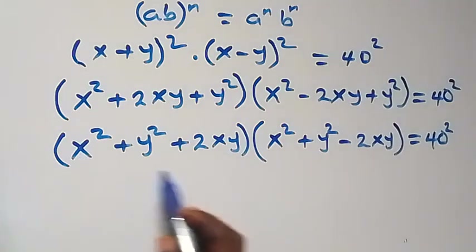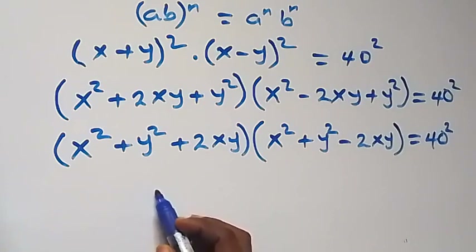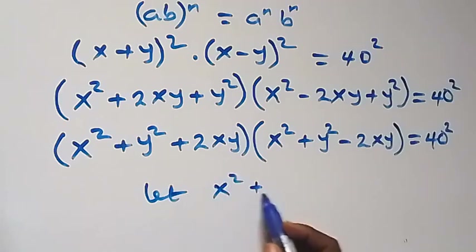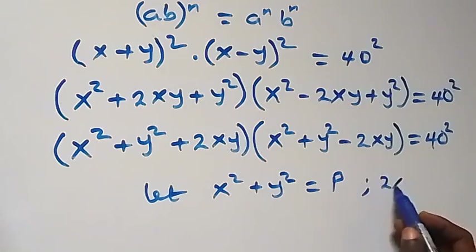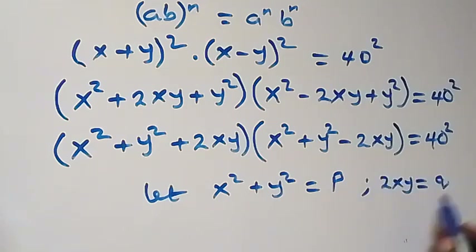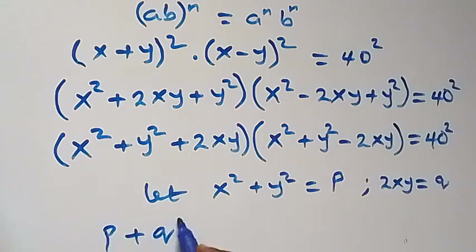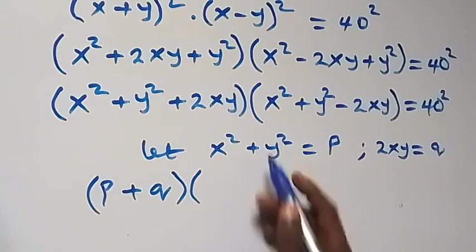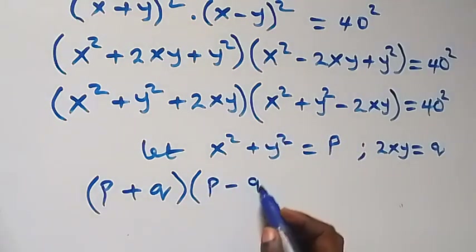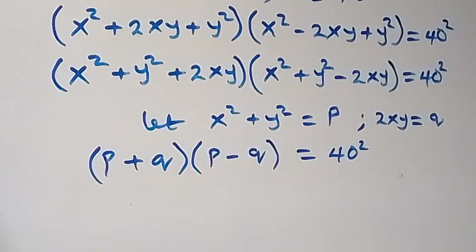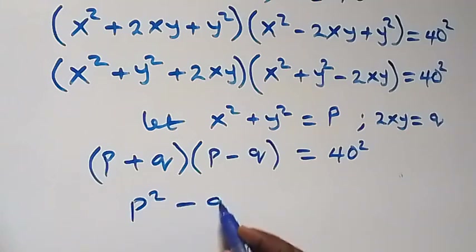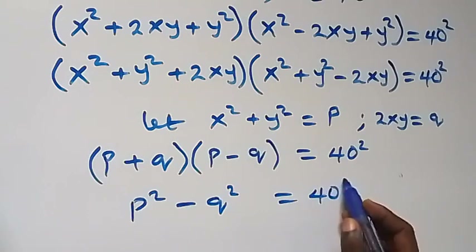Now let's use a substitution. Let x squared plus y squared equal p, and let 2xy equal q. Then the first bracket becomes p plus q, and the second bracket becomes p minus q. Multiplied together, this gives us p squared minus q squared, which equals 40 squared.